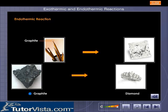Graphite, a soft grey allotrope of carbon, can be converted to another allotrope, diamond, by heating graphite under very high pressure. This is an endothermic reaction which is represented here.